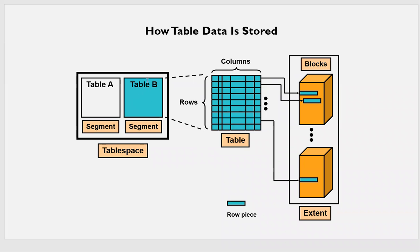If I take this particular table B, it will have a number of columns and number of rows. This particular representation of the table — number of rows and number of columns — is basically made up of data blocks, that is 8K blocks. A combination of all these 8K blocks will make an extent. These particular rows are stored under this particular block.